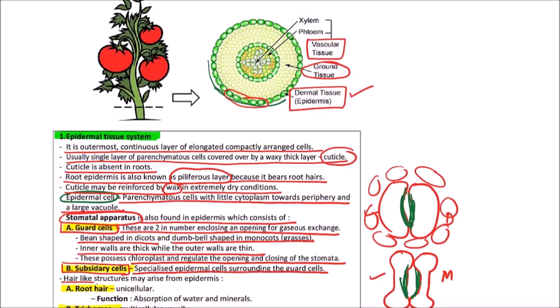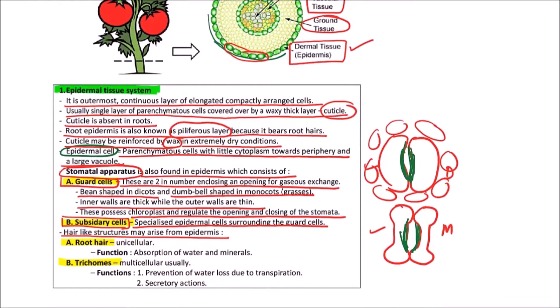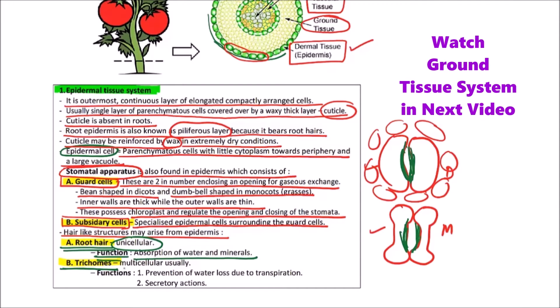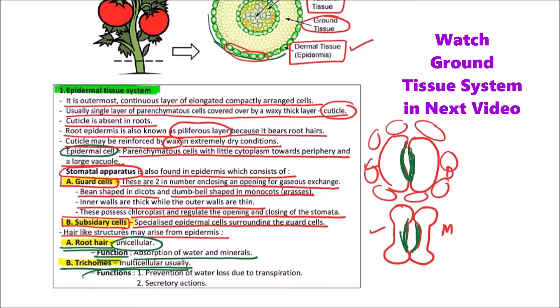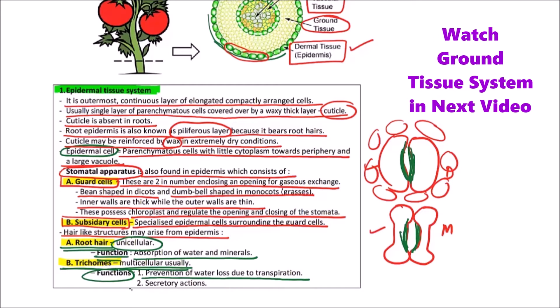Hair-like structures may arise from the epidermis. These hair-like structures represent root hair, or in a stem these are termed as trichomes. Root hairs are unicellular and main function is absorption of water and minerals. Trichomes are usually multicellular and the main function is prevention of water loss due to transpiration and secretory actions.